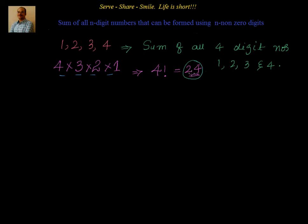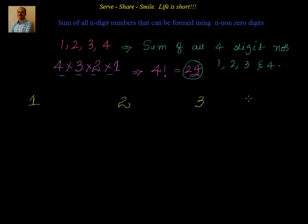So I can form 24 four-digit numbers using 1, 2, 3, 4. Now what we will do — we will take some time and try to chalk out all the numbers which are formed, and then we will see how to find out the sum of them. Let's write down all the numbers starting with 1, then starting with 2, starting with 3, and starting with 4.